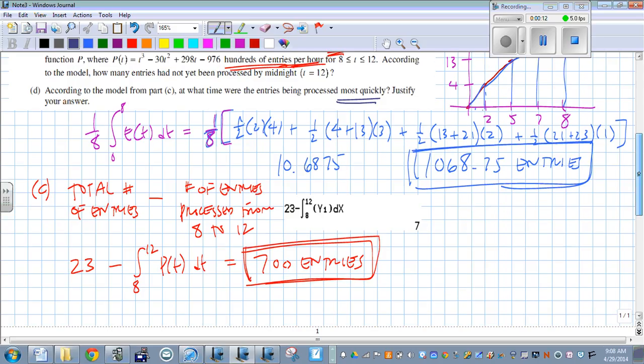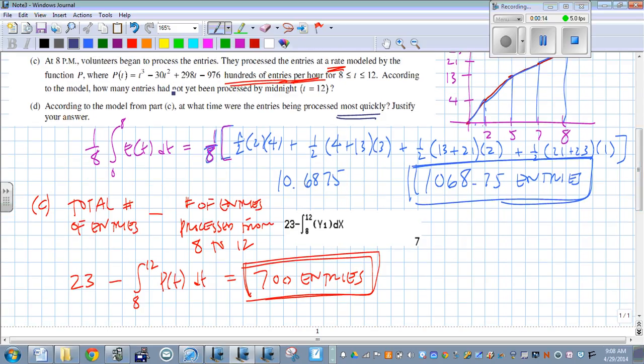So with this, we have this rate. We want to figure out when this rate is the quickest. So what are we really finding here? We want to figure out the time when it's the quickest, but what does it mean for this rate to be the quickest? What is that?